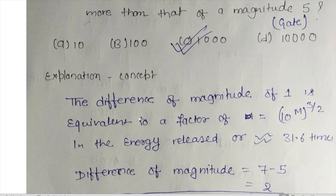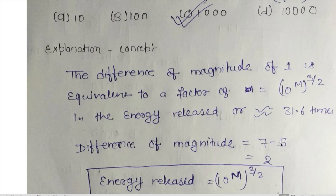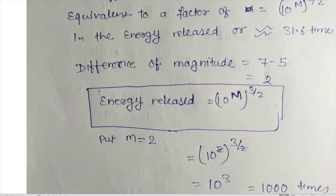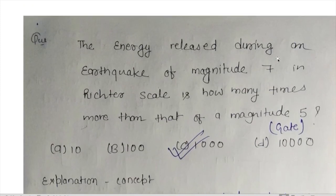The difference in magnitude of 1 is equivalent to an energy factor of 10^(3/2). The difference in magnitudes here is 7 minus 5 = 2. Using the energy release formula, 10^(m × 3/2) = 10^(2 × 3/2) = 10^3 = 1000 times. Also, the amplitude changes by 100 times since a magnitude difference of 2 means 10 × 10 = 100. So if the question asks about energy, the answer is 1000 times; if amplitude, it's 100 times.